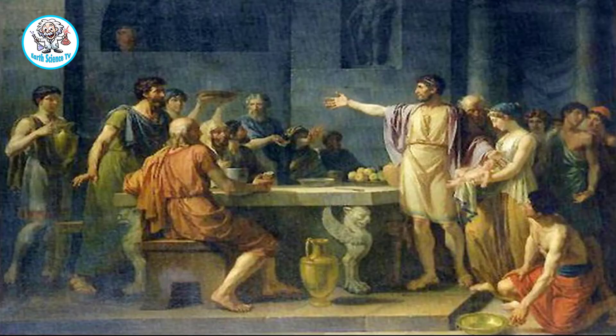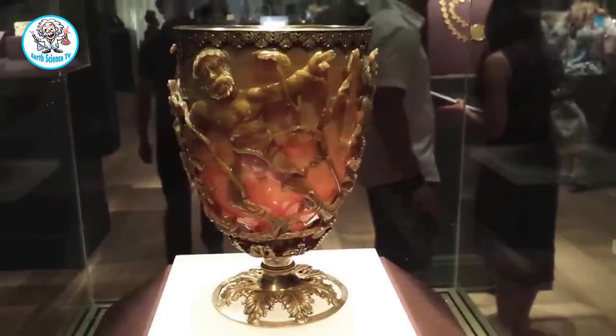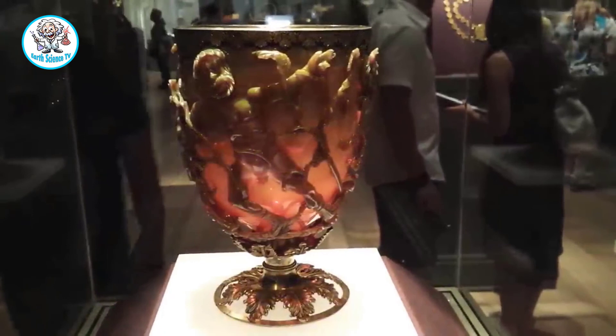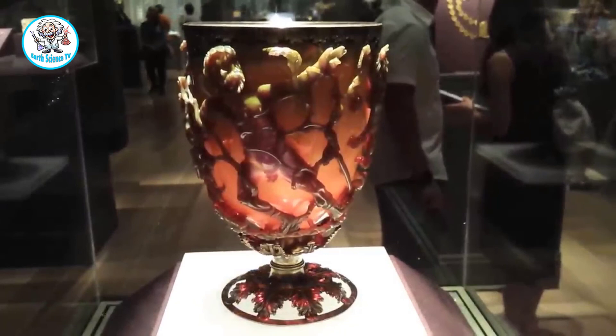The original 4th-century Anno Domini Lycurgus cup, probably taken out only for special occasions, depicts King Lycurgus ensnared in a tangle of grapevines, presumably for evil acts committed against Dionysus, the Greek god of wine.